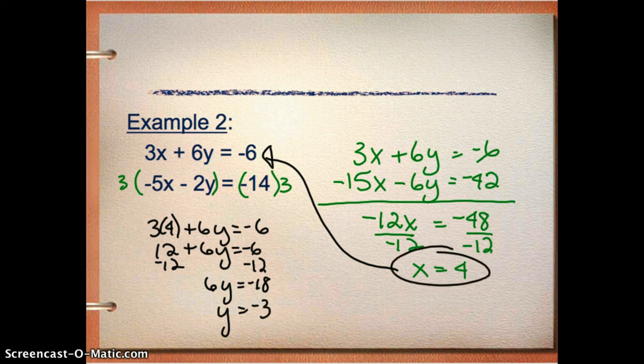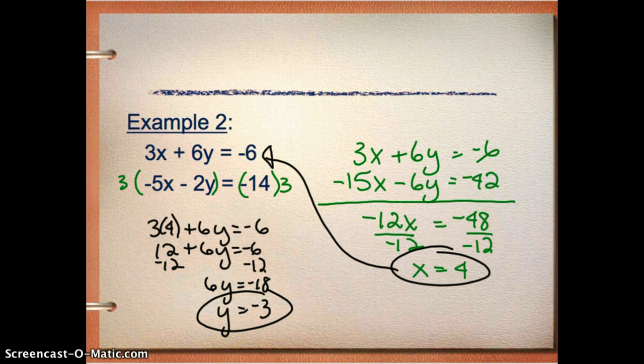And then divide by 6 and I get y equals negative 3. So I'm pretty sure I'm right. But of course I want to double check it because it's easy to make mistakes here and it's nice to be able to double check.